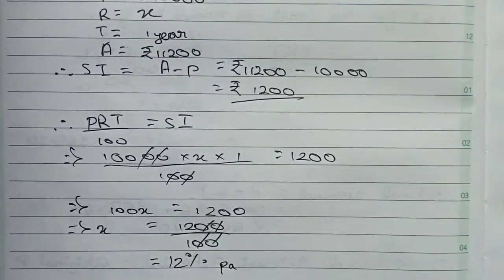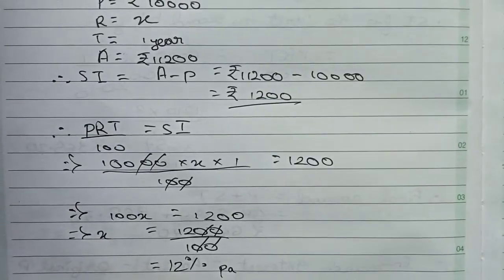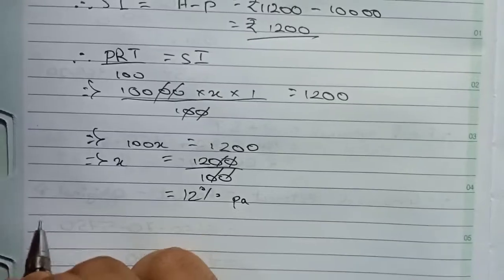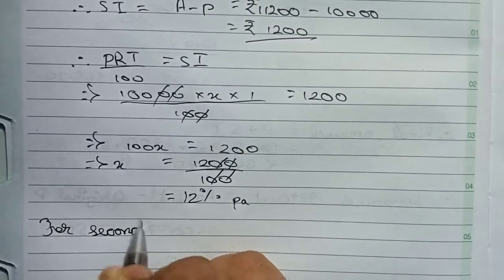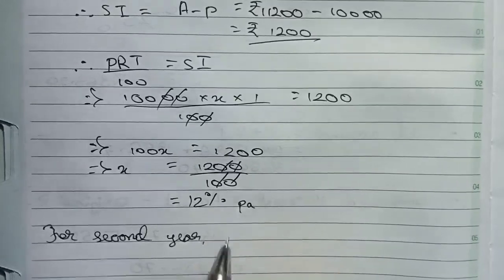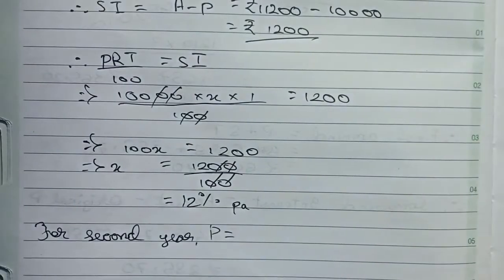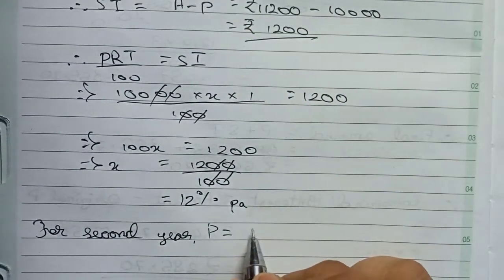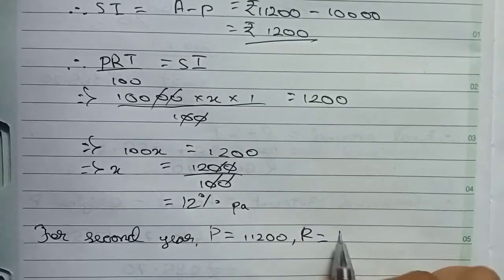Now I have to find the SI for the second year. For the second year, the principal equals the amount from the first year, which is rupees 11,200. The rate is 12% per annum, and time is one year.